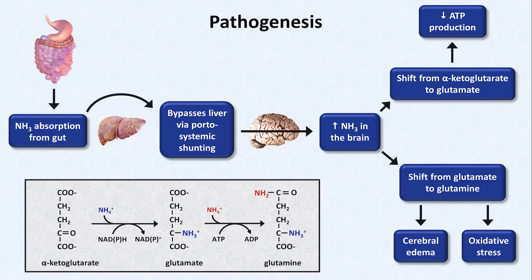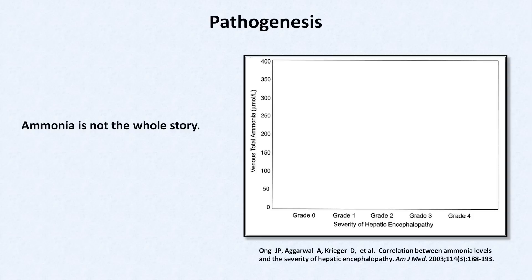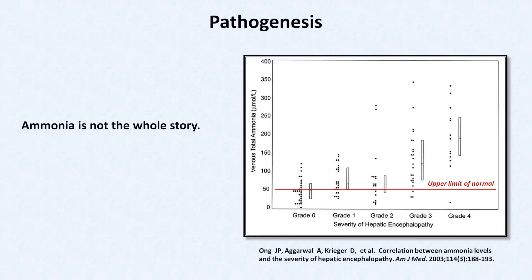Having gone through that, it's important to realize that ammonia is not the whole story. Consider this study in which 121 consecutive patients with cirrhosis admitted to a hospital for any reason had their ammonia levels measured and had the severity of encephalopathy determined by clinical exam. Each dot represents one patient. The higher the grade, the worse the encephalopathy is, and grade zero means there is no detectable encephalopathy at all. As you can see, there is certainly a relationship between ammonia levels and severity of encephalopathy, but it's not perfect. Almost half of patients with no encephalopathy had elevated ammonia levels, and there were other patients with very severe encephalopathy with normal levels, including one who was literally comatose.